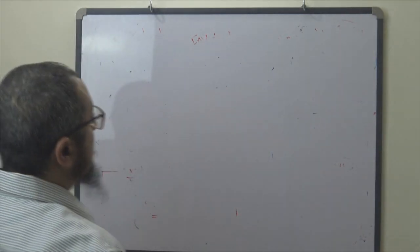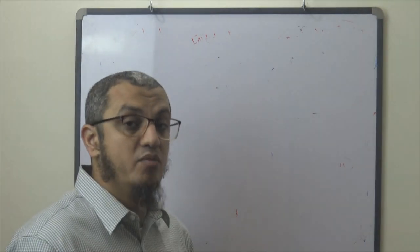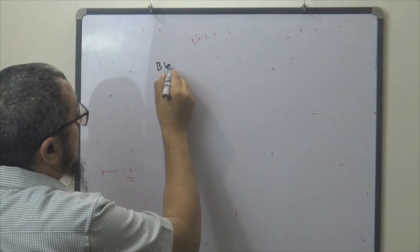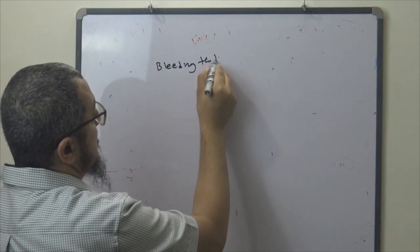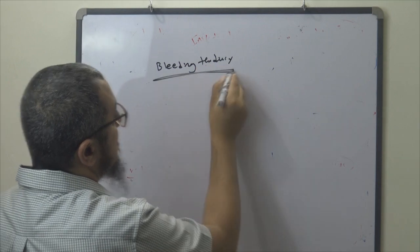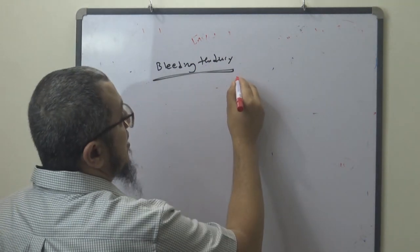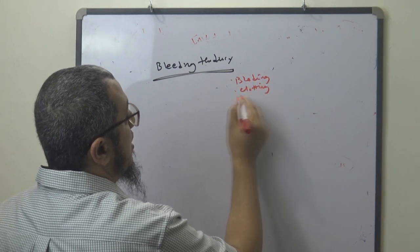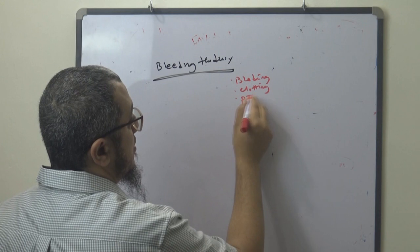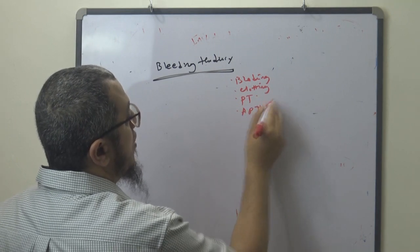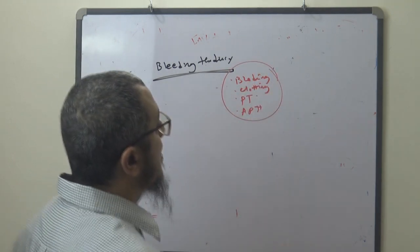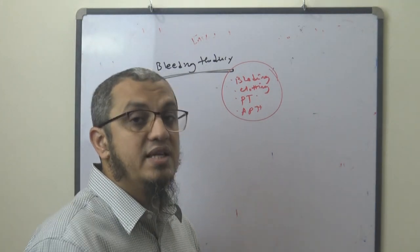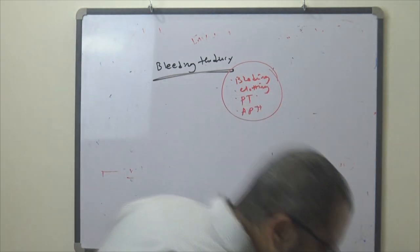Another cause to investigate is bleeding tendency or bleeding disorders such as hemophilia. To investigate for bleeding tendency, we perform bleeding time, clotting time, BT, and APTT — these tests help identify the cause of bleeding disorders.